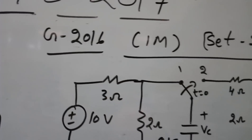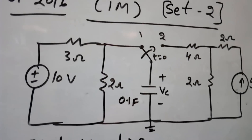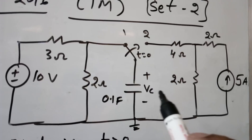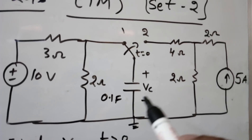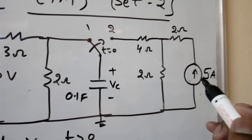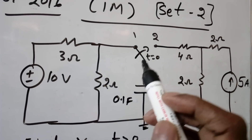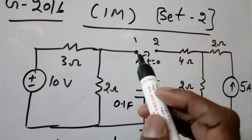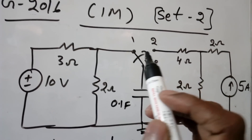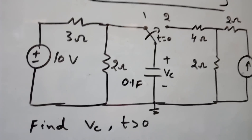This question came in GATE 2016. There is a 10-volt source, 3 ohm and 2 ohm resistors, a capacitor of 0.1 farads, and a remaining circuit with 4 ohm, 2 ohm, 2 ohm, and 5 ohm. The switch is initially at position 1, and at t equal to 0 it moves to position 2. We have to find VC for t greater than 0.